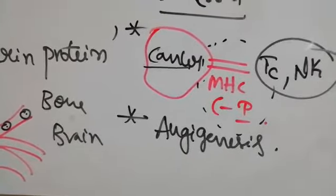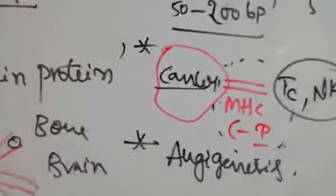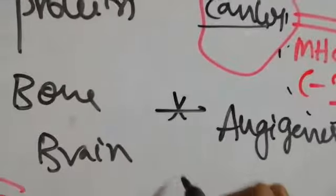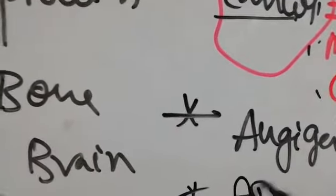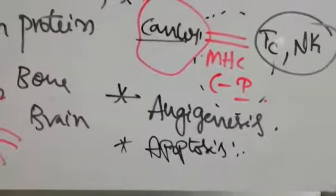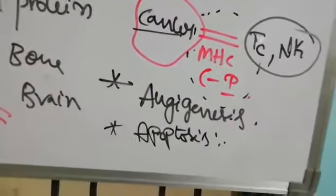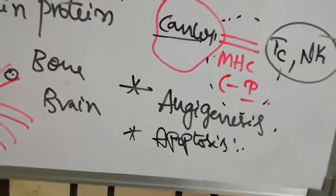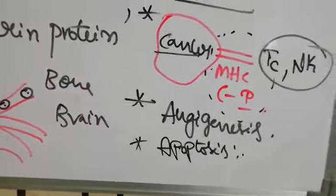The last characteristic is apoptosis. Apoptosis means cell death. Cell death in cancer cells does not take place. They continuously grow, and death does not occur.